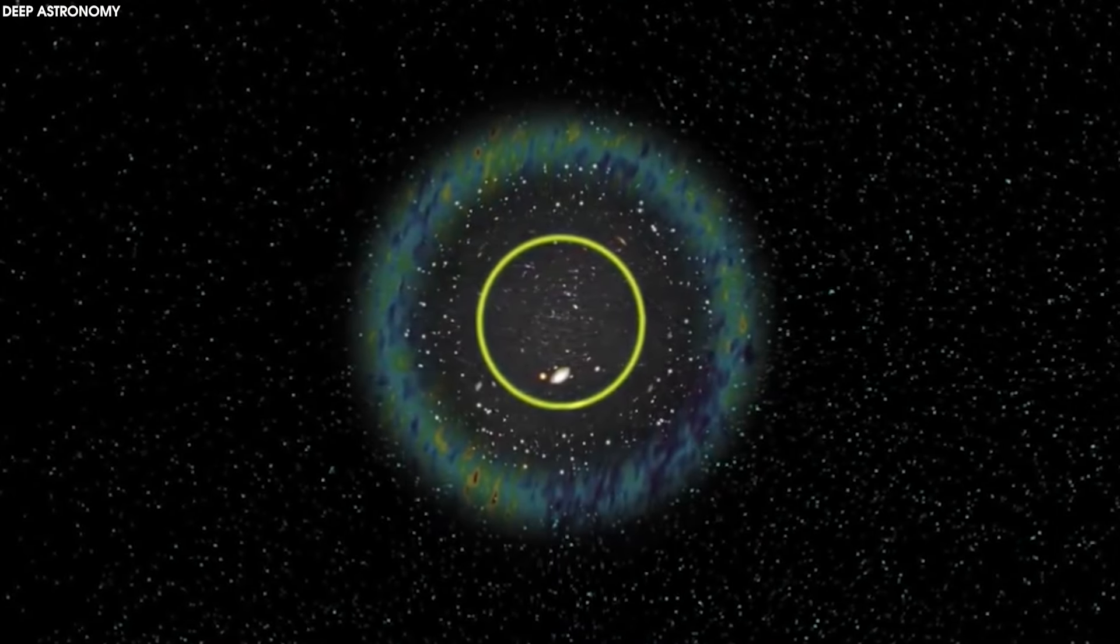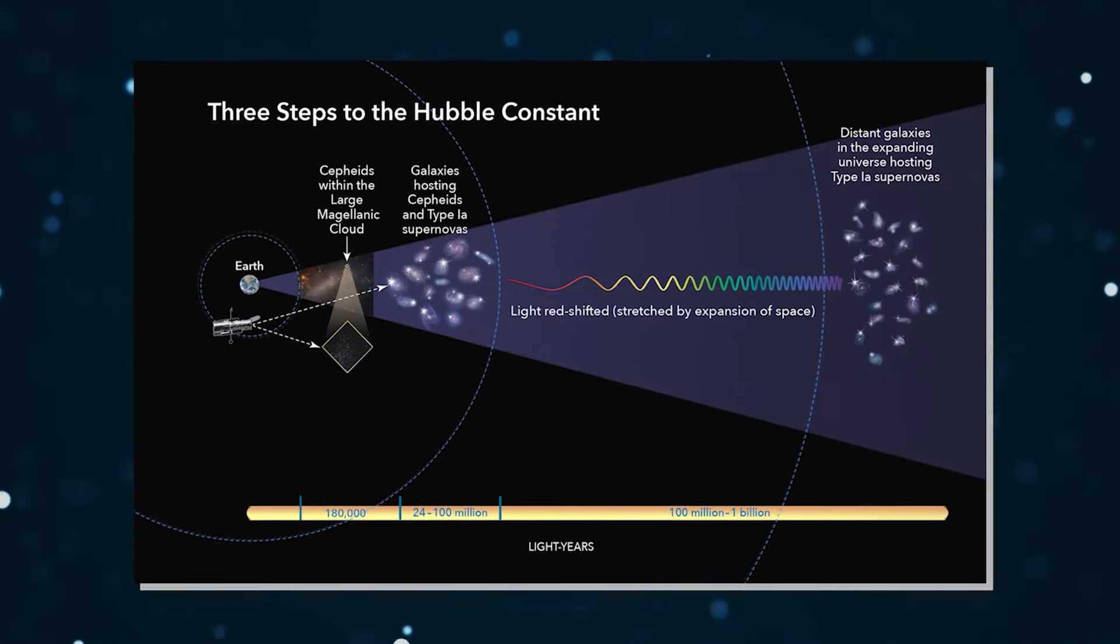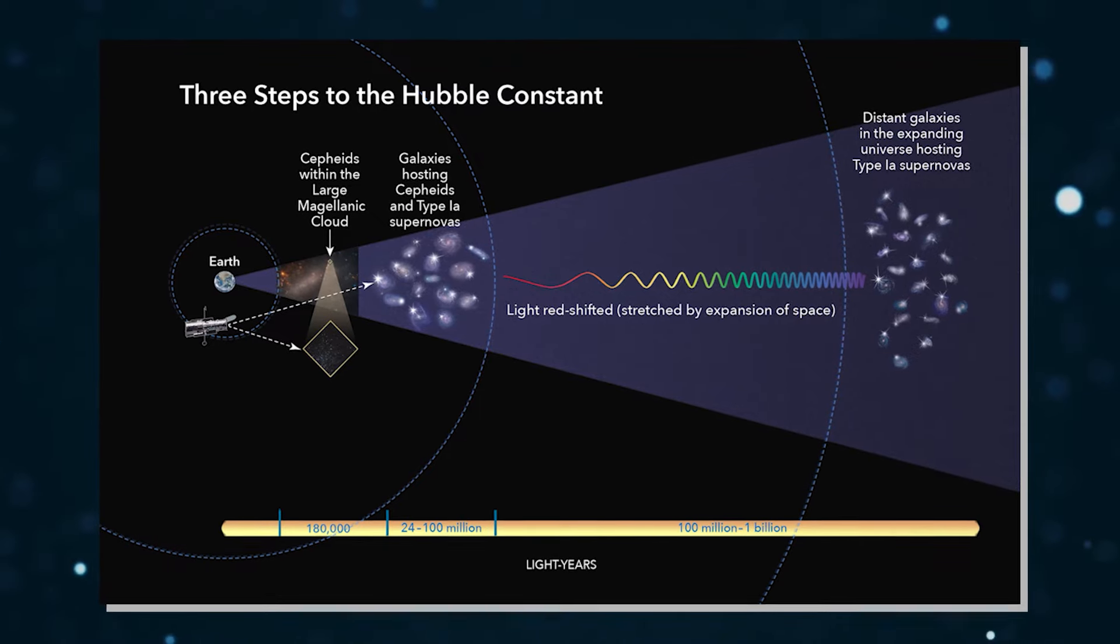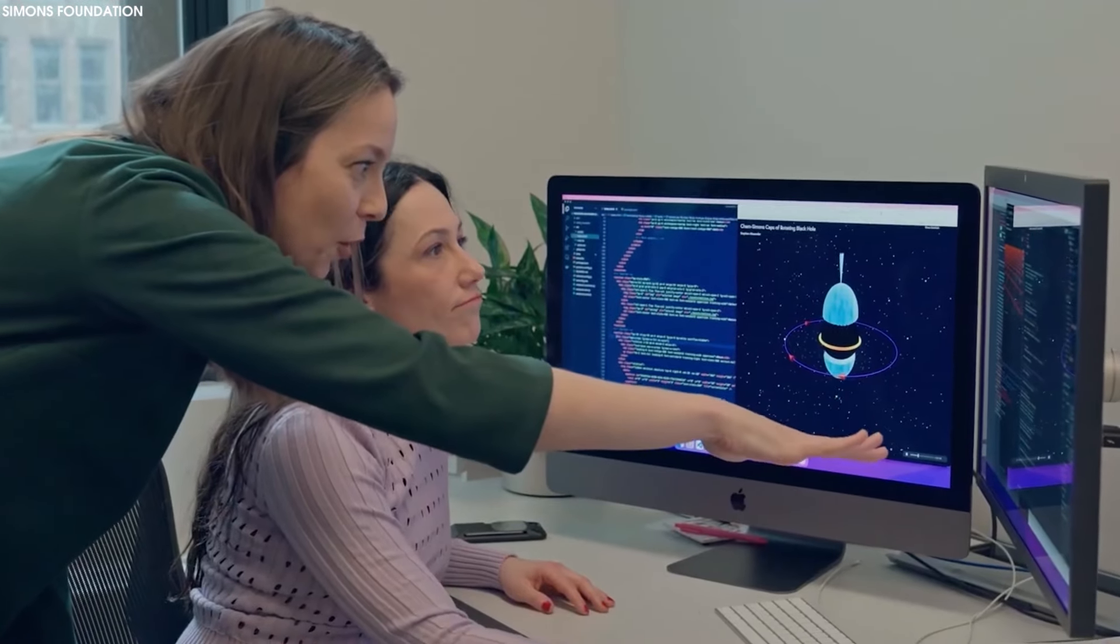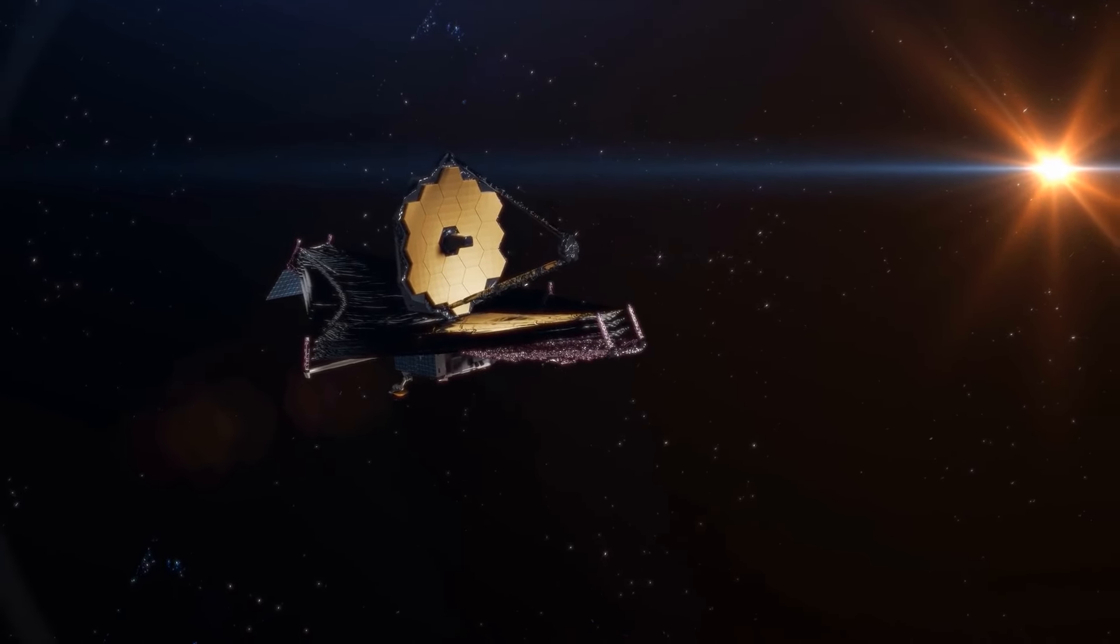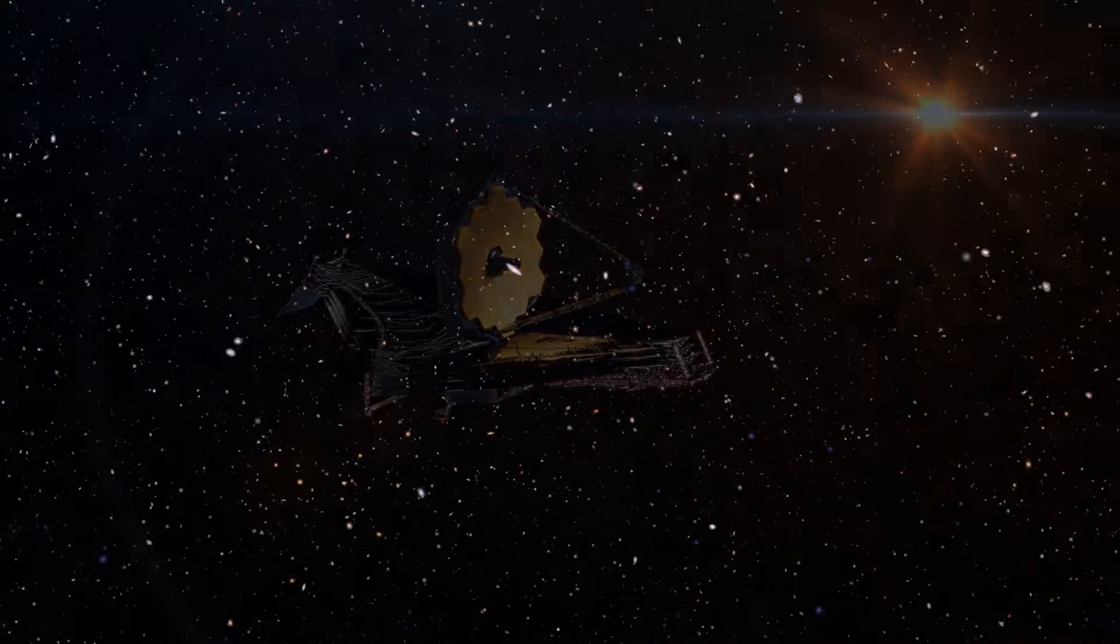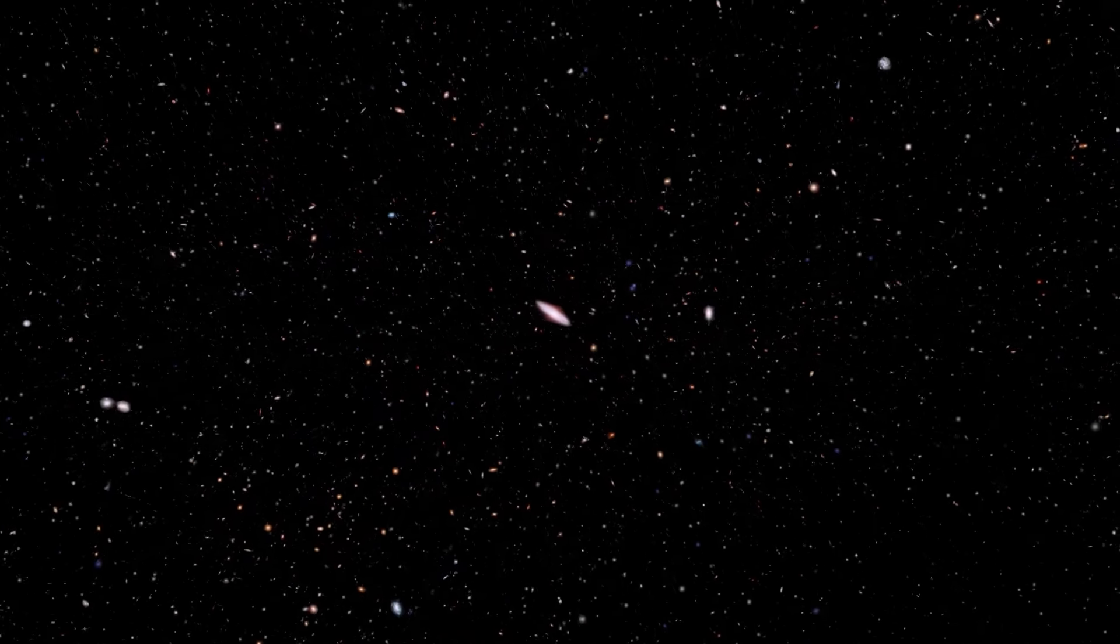Take the matter of how fast the universe is expanding. This is a foundational fact in cosmological science, the so-called Hubble constant. Yet scientists have not been able to settle on a number. There are two main ways to calculate it. One involves measurements of the early universe such as the sort that the Webb is providing. The other involves measurements of nearby stars in the modern universe.